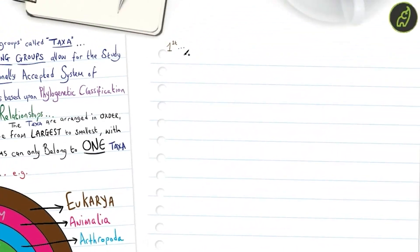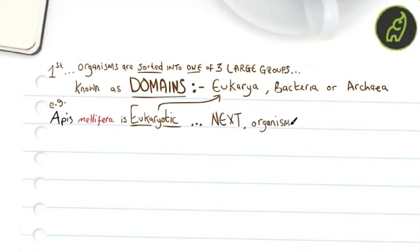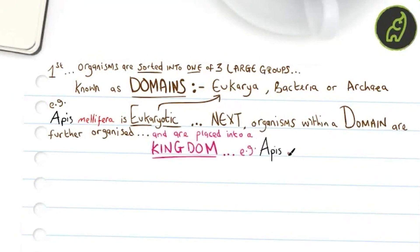First, organisms are sorted into one of three large groups known as domains: the Eukarya, Bacteria, or the Archaea. For example, Apis mellifera is eukaryotic. Next, organisms within a domain are further organized and placed into a kingdom. Apis mellifera is an animal, therefore it is placed in the kingdom Animalia.